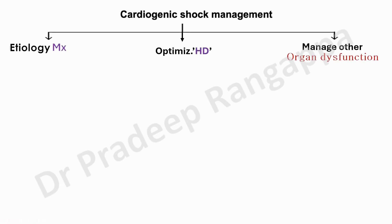When talking about cardiogenic shock management, use a pyramid approach — start broad, then build to specific. Put it into three major categories: management of etiology, optimization of hemodynamics, and management of other organ dysfunction. Unless we treat the underlying cause, we may not be able to address the shock.